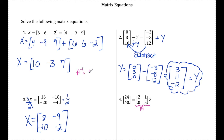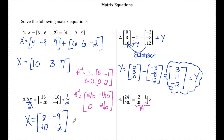The inverse of a matrix is 1 over the determinant AD minus BC. In this case, that would be 10 minus 0. I switch the 2 and the 5, and negate the other two elements: negative 1 and 0. So the inverse is 1/10 times that matrix. I'll reduce these fractions: 5/10 reduces to one half, negative 1/10 stays, 0 stays, and 2/10 reduces to one fifth.